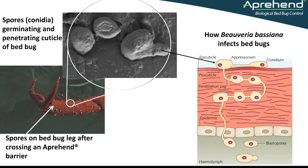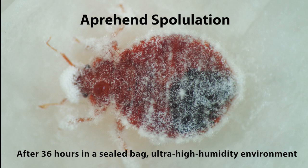As shown in the diagram to the right, the conidia — or spore — germinates, produces an appressorium or penetration peg, and moves down through the epidermis and into the hemolymph, or blood system, of the insect. That is how it grows, using all of the nutrients from the blood inside the insect to sustain its own growth. The bed bug essentially dies of starvation and dehydration as a result of the fungus colonizing within its blood system.